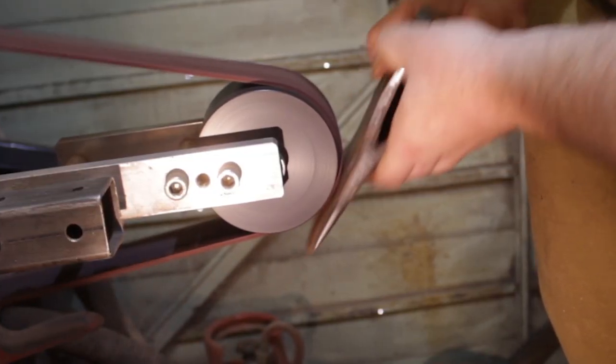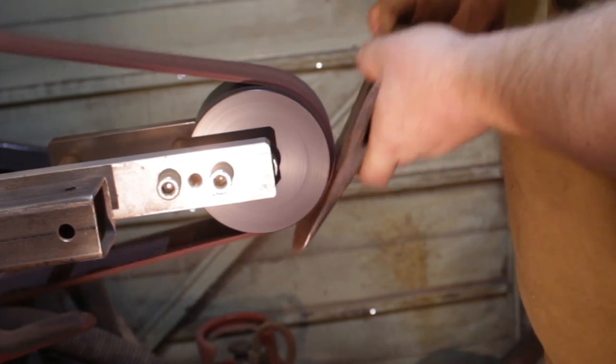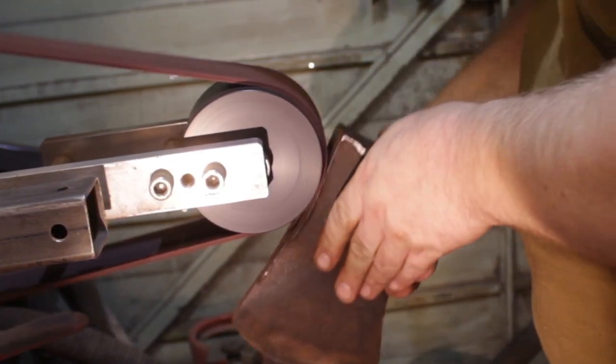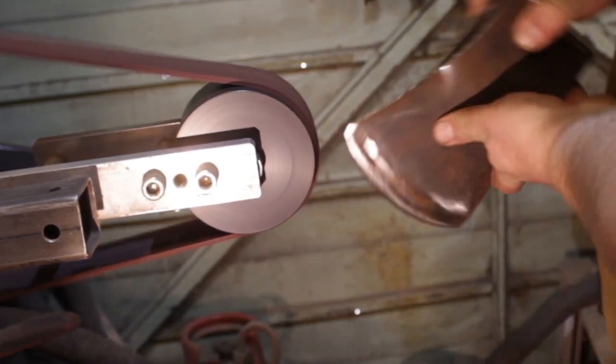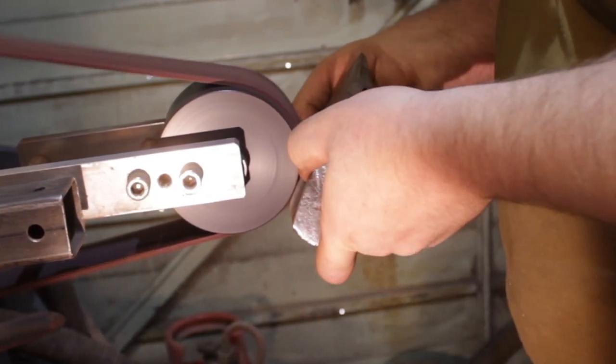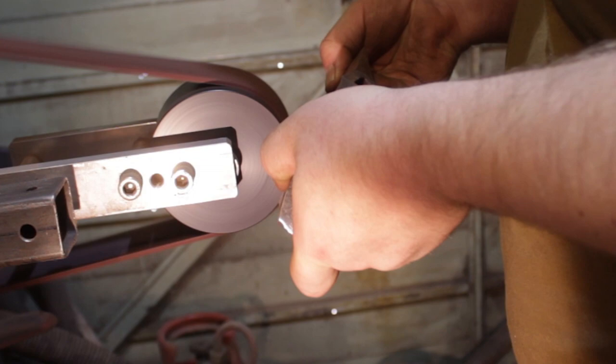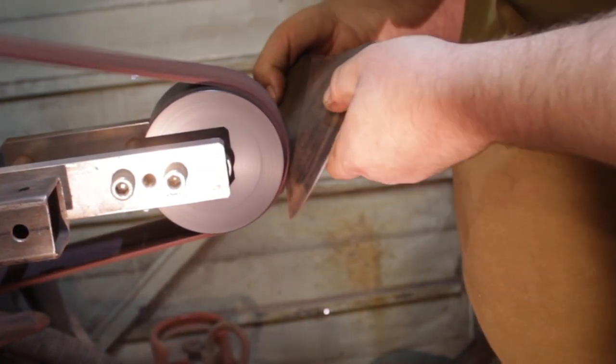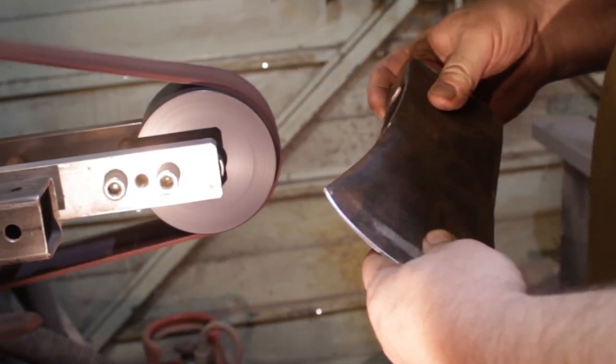So all this is, is a sort of stiff nylon scourer. I've gone to the crimson one now, which is the medium, and just tidying up the underneath, inside, and just making sure that the outside is finished, but without losing that lovely black patina too much.